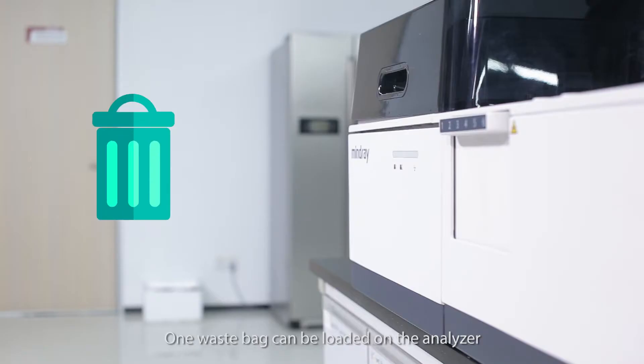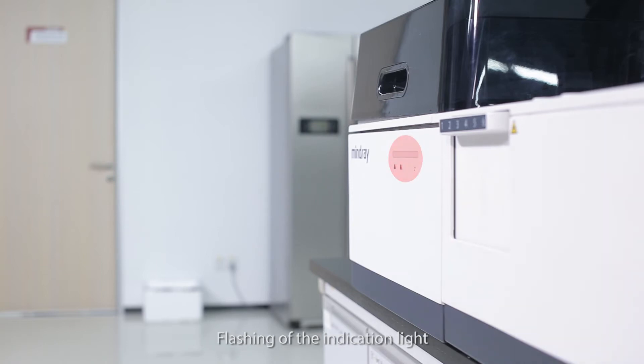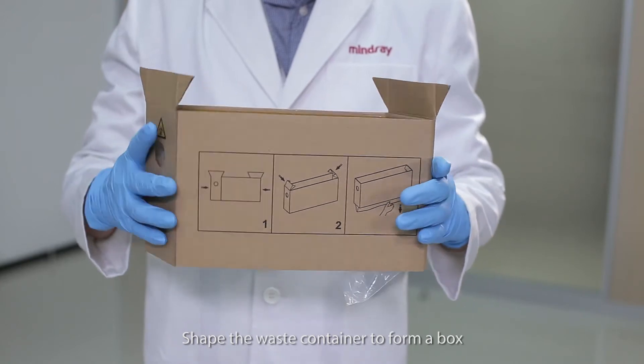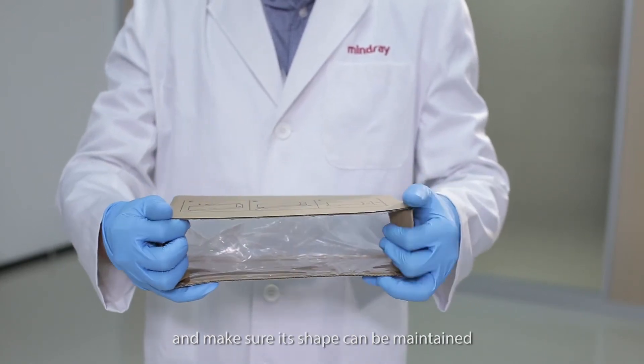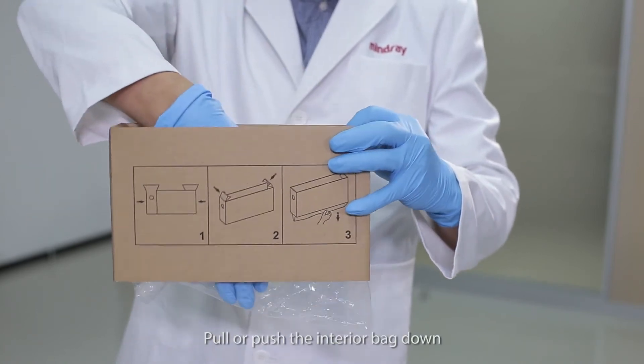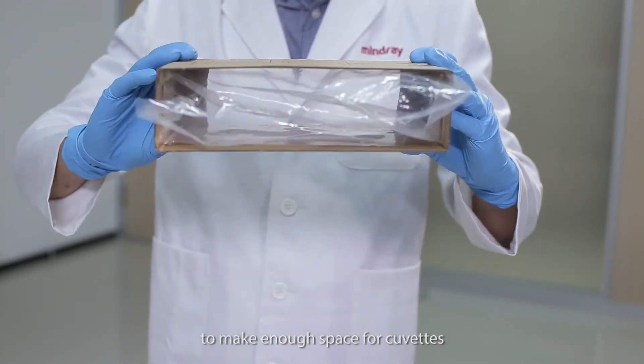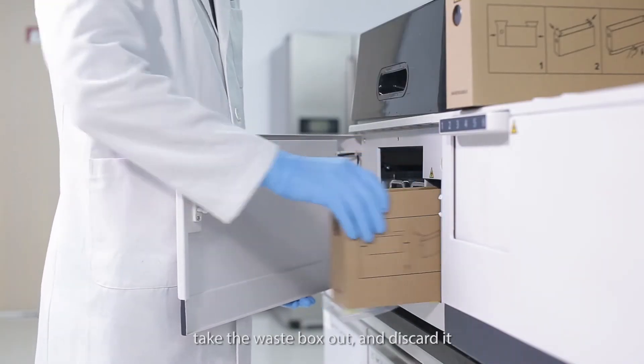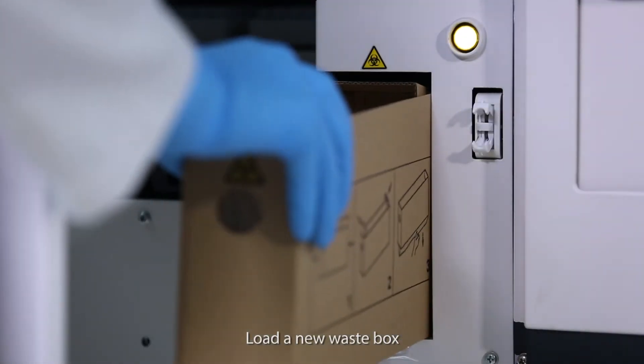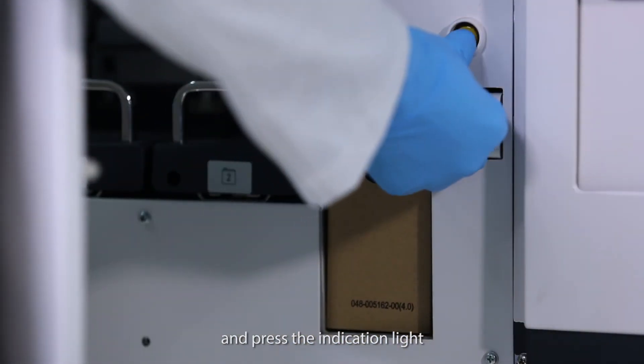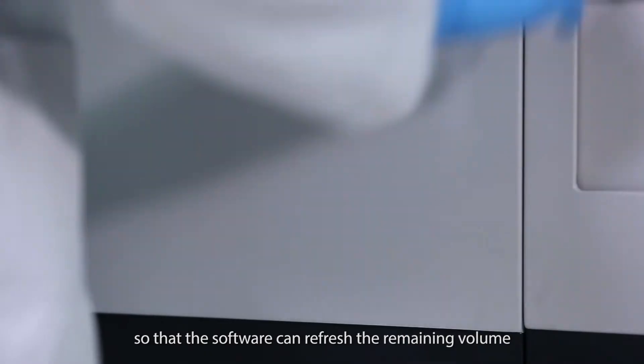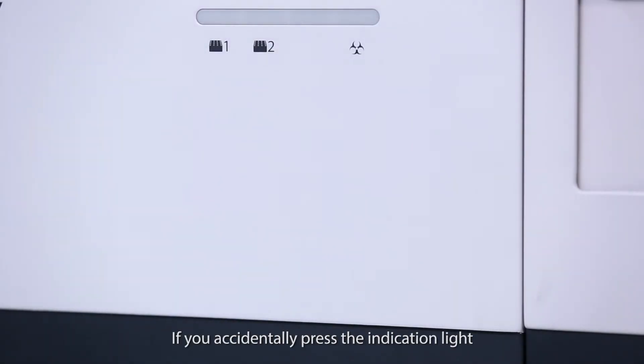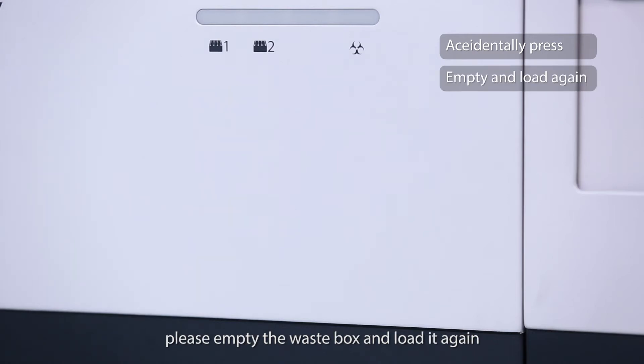One waste bag can be loaded on the analyzer. Flashing of the indication light means it needs replacement. Shape the waste container to form a box and make sure its shape can be maintained. Pull or push the interior bag down to make enough space for cuvettes. Open the door, take the waste box out and discard it. Load a new waste box and press the indication light so that the software can refresh the remaining volume of the waste box. If you accidentally press the indication light, please empty the waste box and load it again.